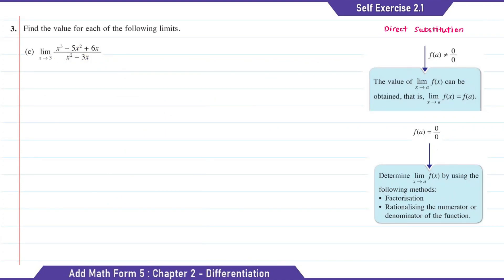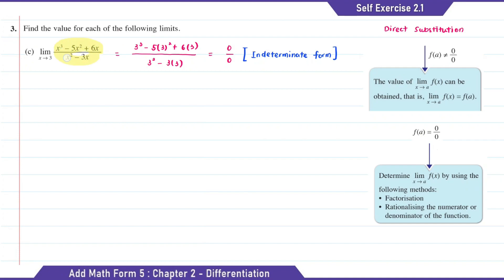Question C: we're going to substitute x with 3 as x is approaching 3. The answer of this is 0 over 0. So to find the limit value for C, we need to factorize this. For the numerator part, the common factor is x, so x bracket (x squared minus 5x plus 6).